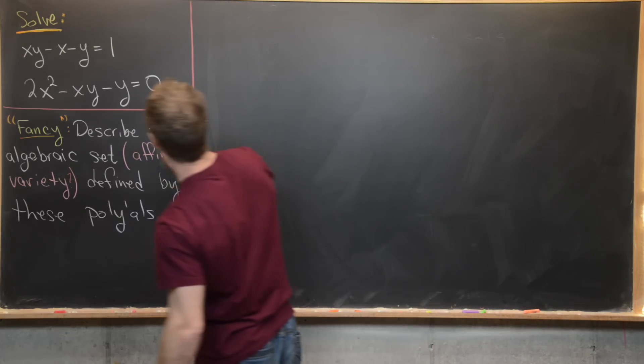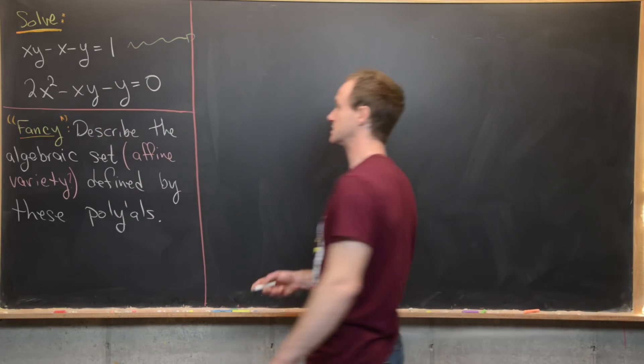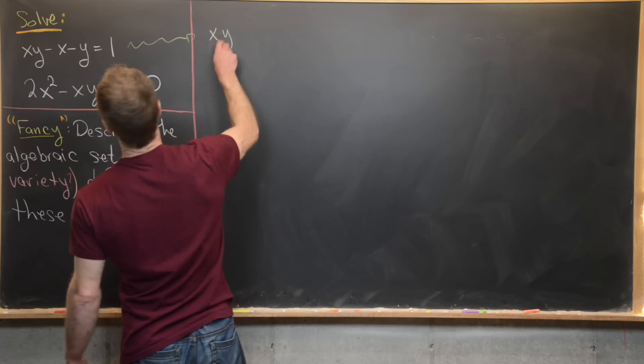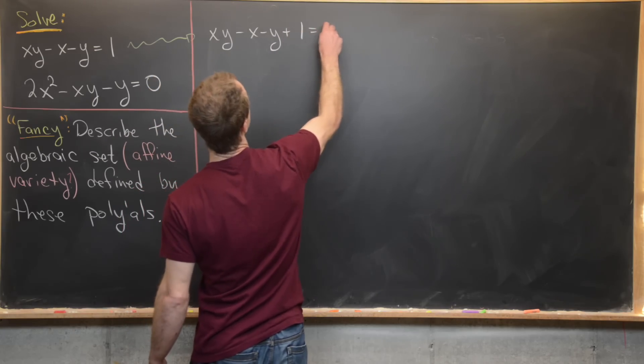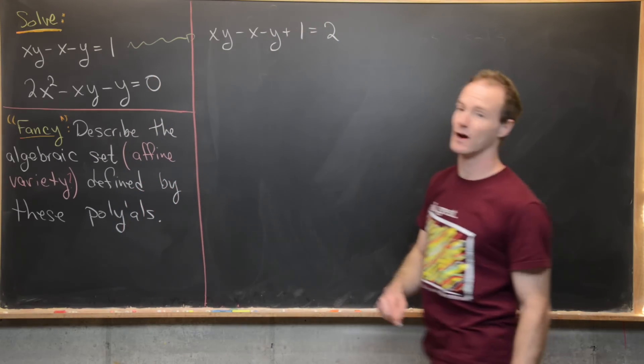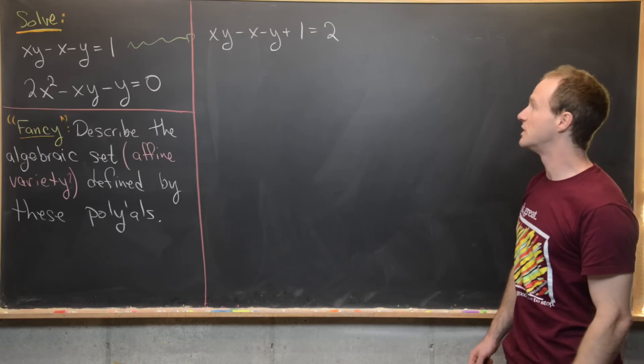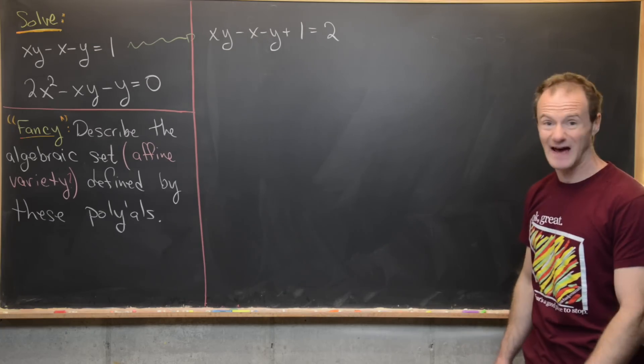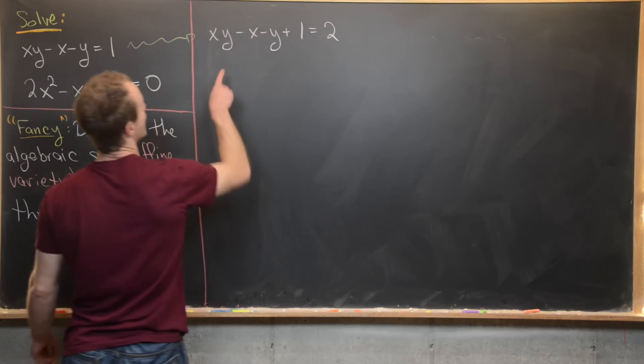Alright so we're going to take this first equation and we're going to add one to both sides. So that's going to give us xy - x - y + 1 = 2. But notice that allows us to factor this left hand side of the equation. So let's maybe see how that goes.